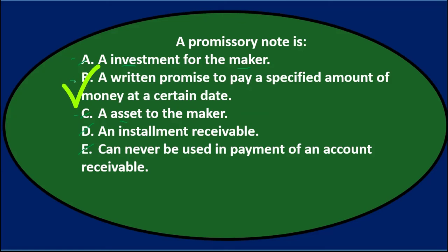Option B is the correct answer. A promissory note is a written promise to pay a specific amount of money at a certain date.